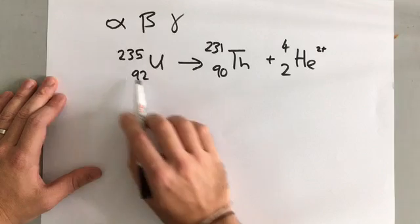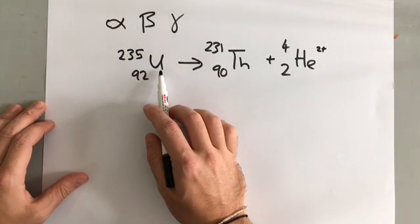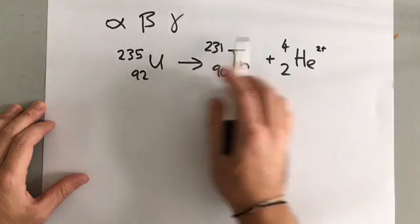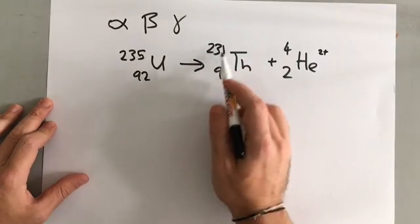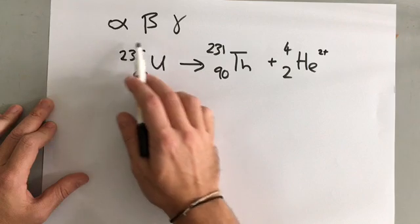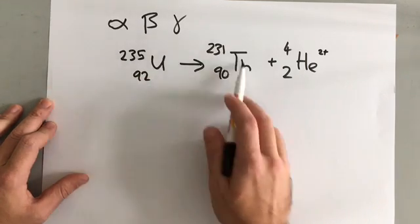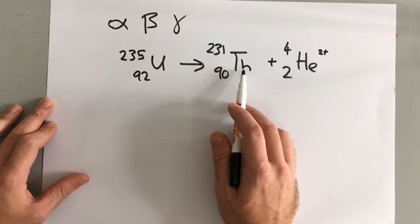So if all this uranium, if we've got a block of uranium, and some of it, every now and then, randomly, is turning into thorium, then eventually, the amount of uranium that we have is going to decrease as more and more and more of it turns into this thorium.